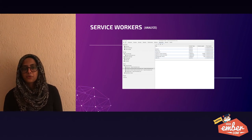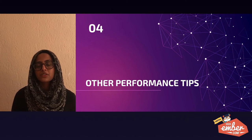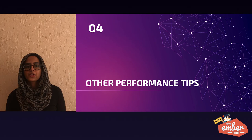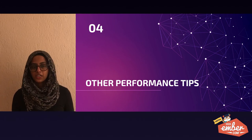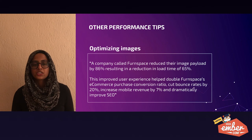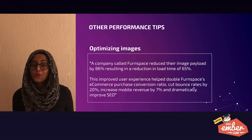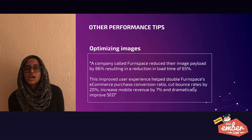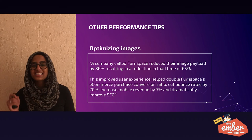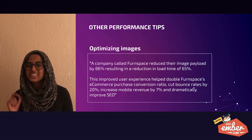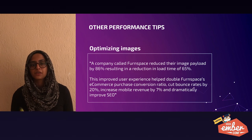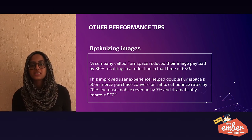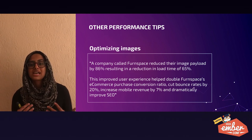Finally, there are other performance tips. Using SVGs where possible, or optimizing images using tools like Squoosh or Image Optimizer, is recommended. HTML source sets are also useful to serve different images to different visitors. A company called PhoneSpace reduced image payload by 86%, resulting in a 65% reduction in load time, which helped double their e-commerce conversion ratio, cut bounce rates by 20%, and increase mobile revenue by 7%.